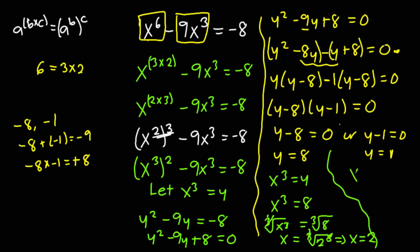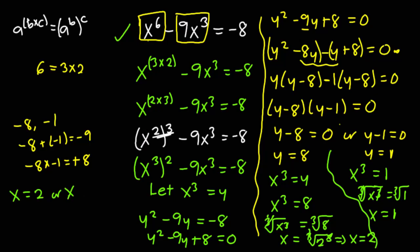When y is equal to 1, x cubed becomes equal to 1. Finding the cubic root of both sides gives cubic root of x cubed equals cubic root of 1. The cubic root of 1 is 1. Therefore, the values of x in this equation are x equals 2 or x equals 1, and these two values of x satisfy this equation.